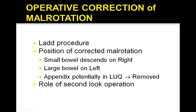The operative correction involves a LADS procedure where you correct the position of the malrotation. The small bowel descends on the right and the large bowel on the left, and the appendix, which is potentially in the left upper quadrant, is sometimes removed.